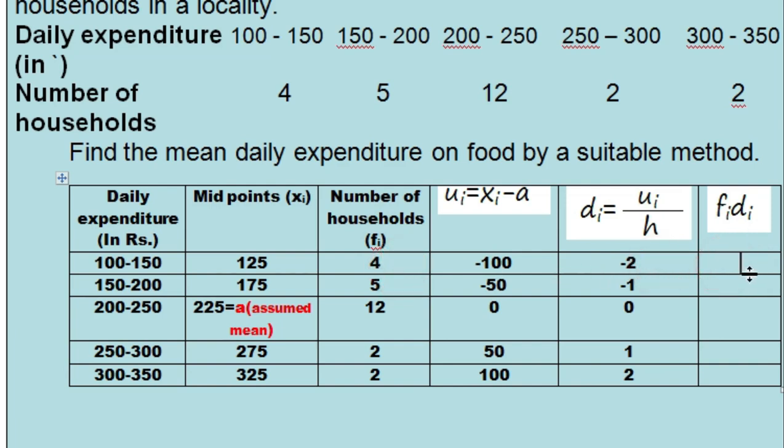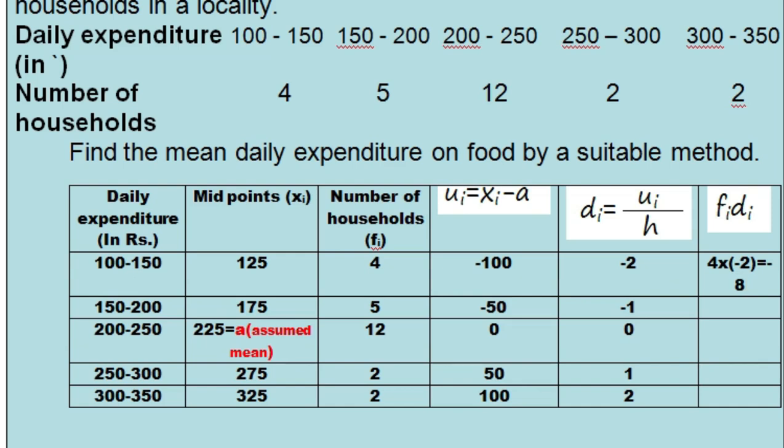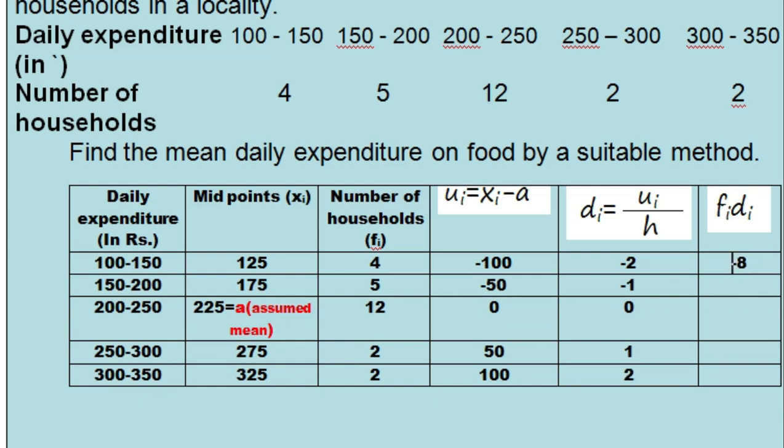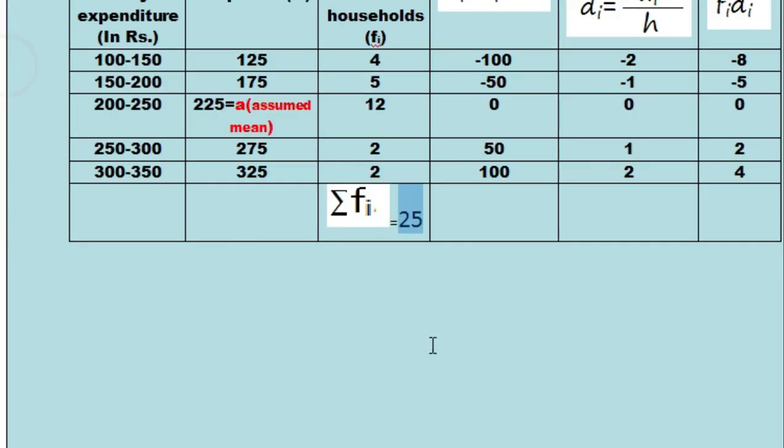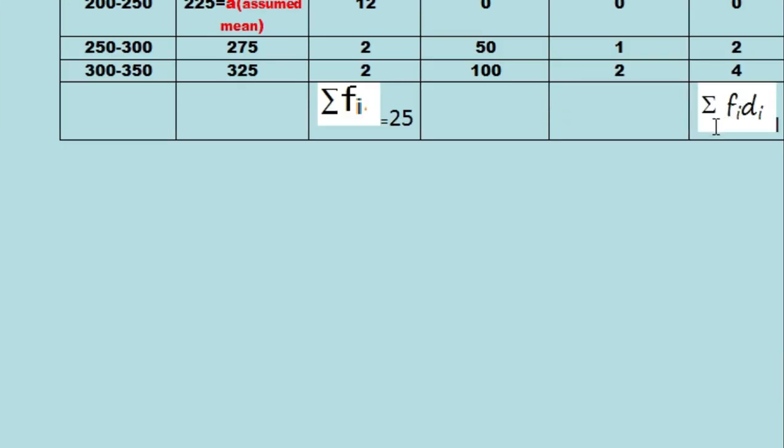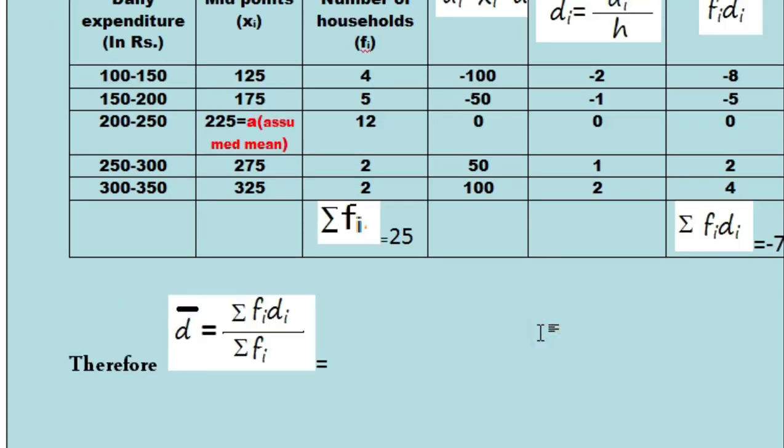4 into minus 2 equals minus 8. 5 into minus 1 equals minus 5. Then 0, then 2, then 4. Summation fi is 25, it is given in the question, and summation fi*di is minus 7.